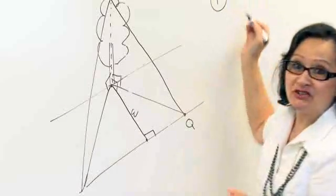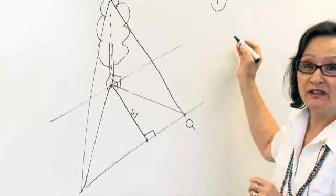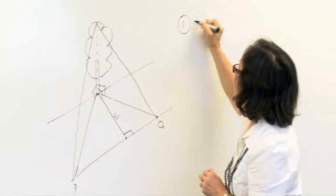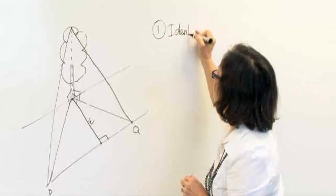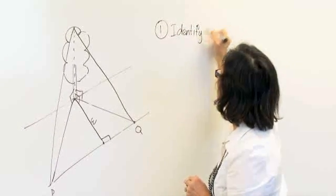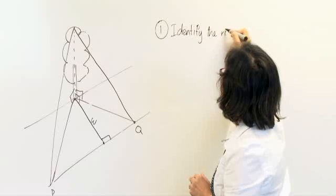In any three-dimensional tree problems, the first thing you need to identify is the right angles in your diagram.